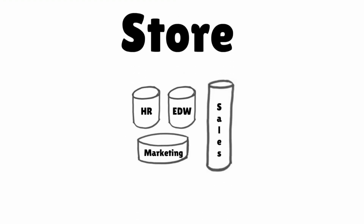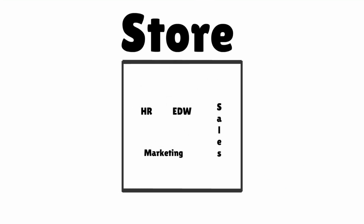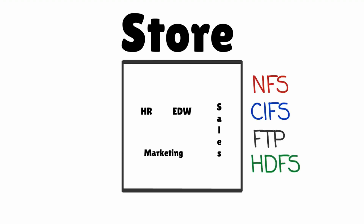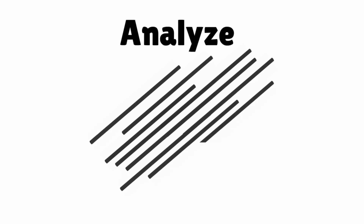Store: getting all the data in one place and breaking down silos is the first and most important step. It is also more functional if you can provide scalable storage and multi-protocol access to all of that data. Some examples are NFS, CIFS, FTP, and newer file systems like HDFS.